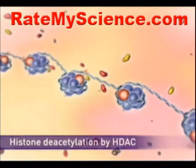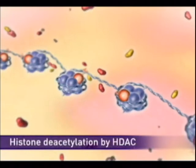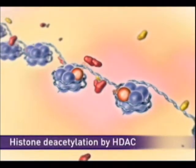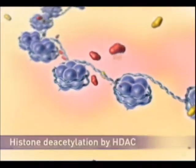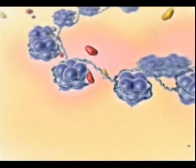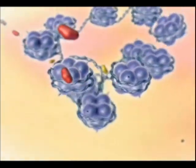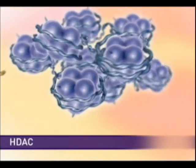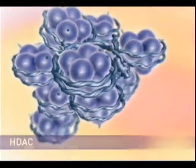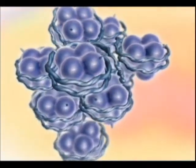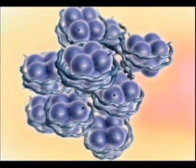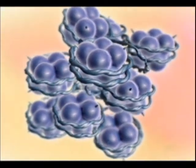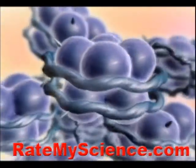Conversely, deacetylation of histones by HDAC results in tight coiling of the DNA and a closed chromatin structure. In some cancer cells, there is an overexpression of HDACs, an aberrant recruitment of HDACs, or an underexpression of HATs, resulting in hypoacetylation of histones, and therefore a condensed or closed chromatin structure.